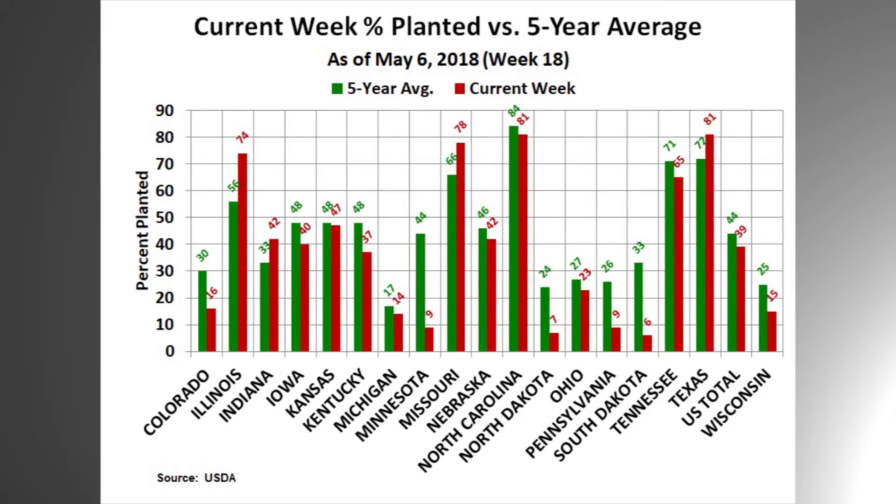Corn emergence is at 8% complete, up from 3% last week and down from the 5-year average of 12%. The slow start in emergence is a result of the delayed planting start and will likely stay below the 5-year average.